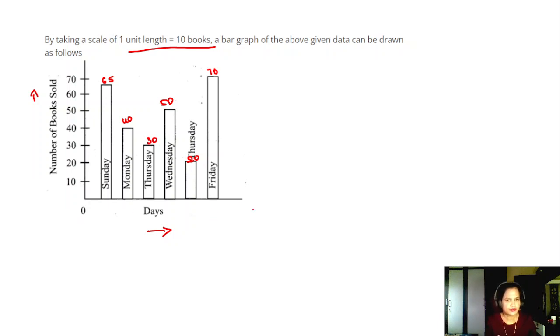Draw the horizontal line and vertical line perpendicular to each other. It should be 90 degrees, the angle between these two. And then keep all the number of books on the y-axis, number of days on the x-axis. Draw these bars.